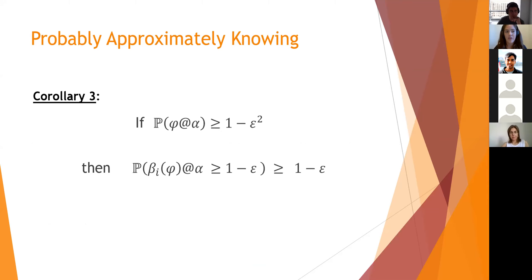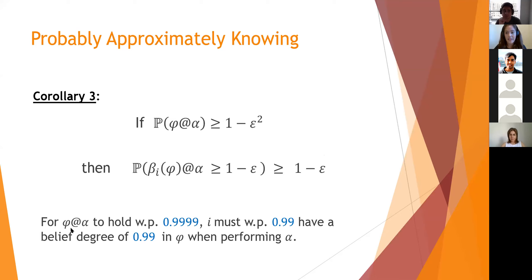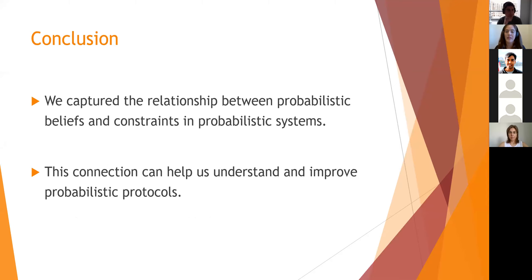Although the degree of belief doesn't have to be at least p every time i performs alpha, it must be at least p in expectation. A corollary, which we call probably approximately knowing, states that for a probabilistic constraint with threshold 1 minus epsilon squared to be met, agent i must, with high probability of at least 1 minus epsilon, have a degree of belief of at least 1 minus epsilon when performing alpha. For a protocol guaranteeing phi holds with probability at least 0.9999, i must with probability at least 0.99 have a degree of belief of at least 0.99. Thank you.